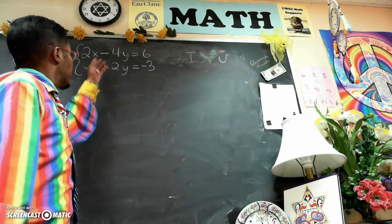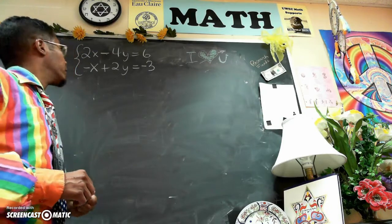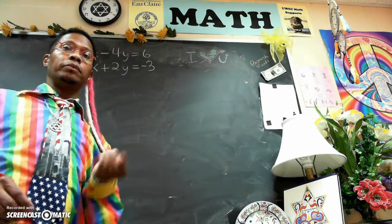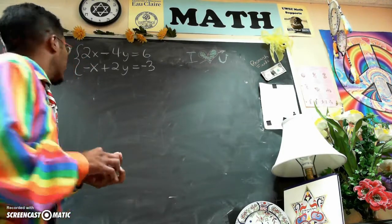Okay, so we're going to solve the following system of two linear equations and two variables using Gauss-Jordan row elimination. And it turns out that this particular system has infinitely many solutions. So let's see how that works out.